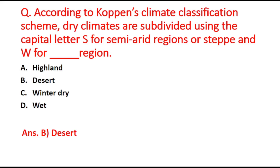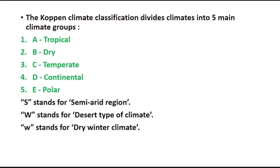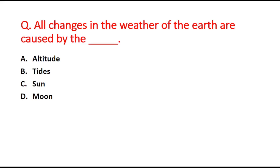Next question: All changes in the weather of the earth are caused by which of the following? Option A is altitude, B is tides, C is sun, and D is moon. The right answer is option C, that is the sun.